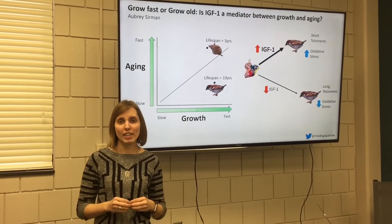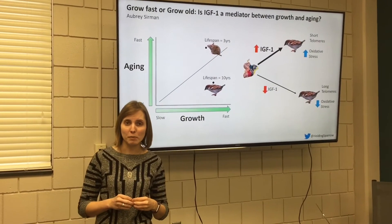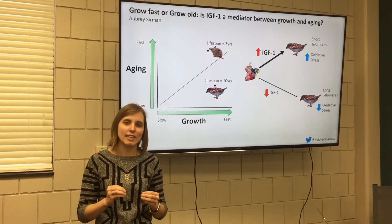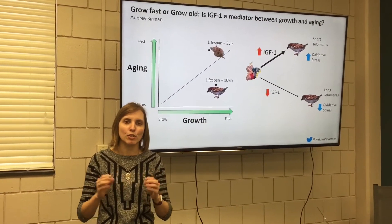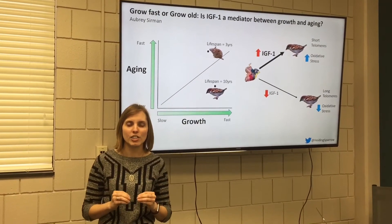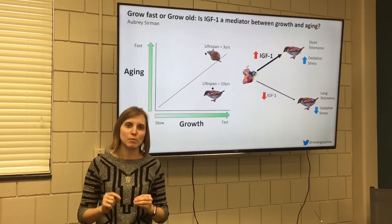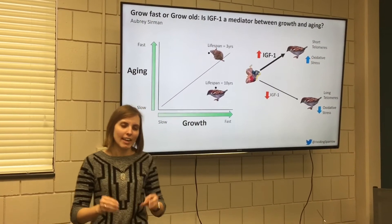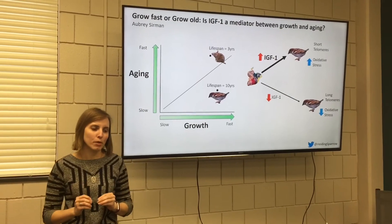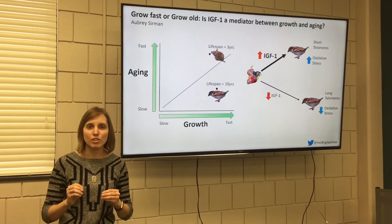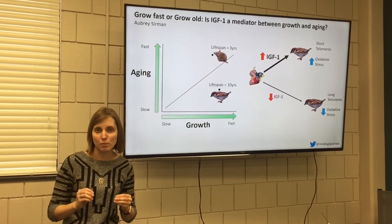Another way we can measure aging is through telomeres. Telomeres are DNA at the end of your chromosomes that shorten as you age and in response to oxidative stress. And it turns out in birds, telomeres are even predictive of lifespan.